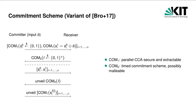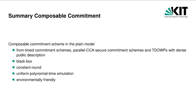Looking back at our commitment scheme, it suffices if COM1 is parallel CCA-secure and extractable. Informally, parallel CCA security is like normal CCA security for commitments, but the adversary has limited access to the CCA oracle — it may perform a polynomial number of commitments with the CCA oracle in parallel, all unveiled at the same time. In contrast to normal CCA security, this weaker notion allows for more efficient constructions. With respect to the timed commitment scheme, we do not need to assume any non-malleability properties. It is important that the receiver will only accept the first round of the unveil phase if the timed commitment to i is still considered to be hiding. We have constructed a composable commitment scheme in the plain model from timed commitment schemes, parallel CCA-secure commitment schemes, and trapdoor one-way permutations with dense public description. The construction makes black-box use of its building blocks only, is constant round, exhibits a uniform polynomial time simulation, and is thus environmentally friendly.